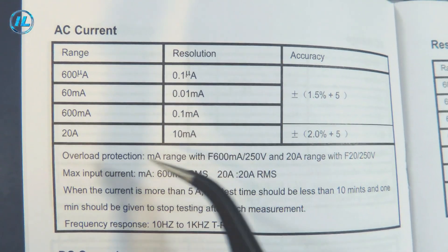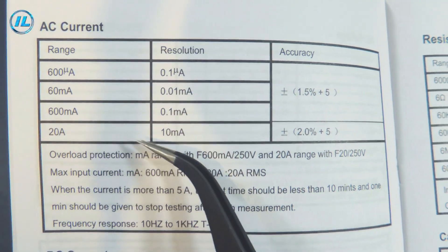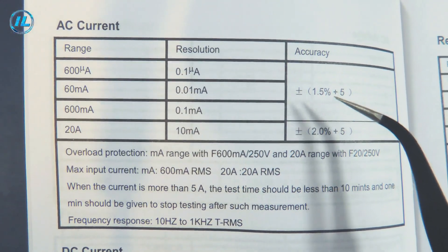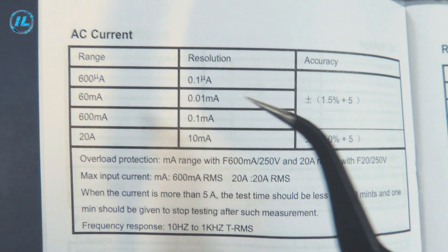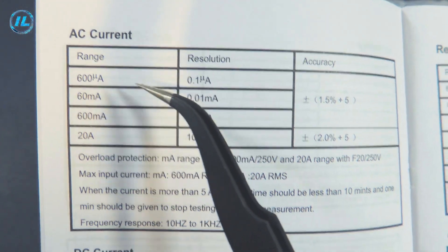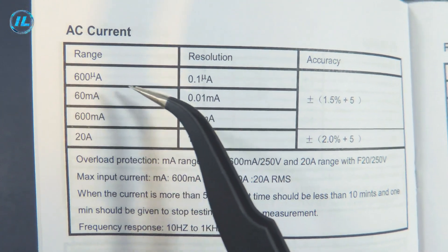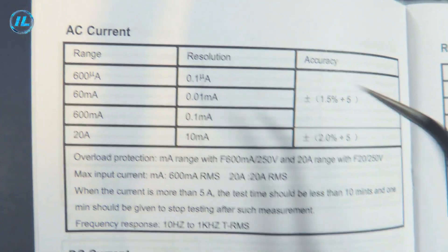Next page, AC current measurement up to 20 amps. Two percent error in the main range, the margin of error is 1.5 percent. The first point is also interesting here. This multimeter can measure ultra low currents, 600 microamps, that is 0.6 milliamps.